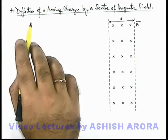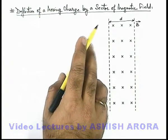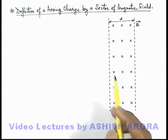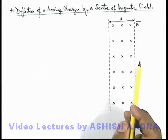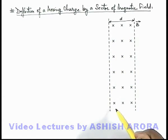Let us study about the deflection of a moving charge by a sector of magnetic field. In this figure you can see, between two parallel boundaries, in a region of width d, a magnetic field sector is created.